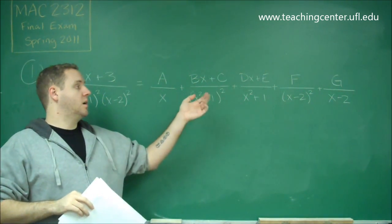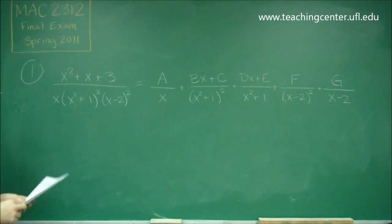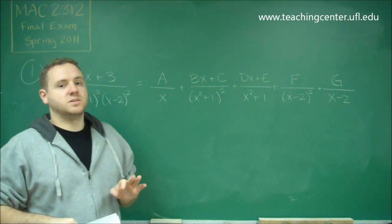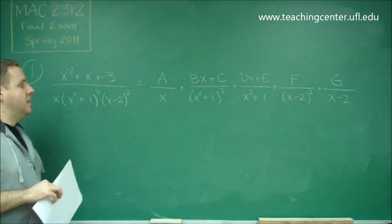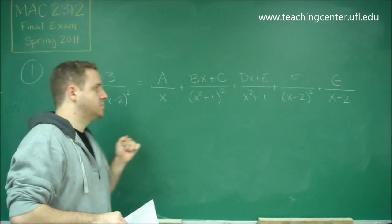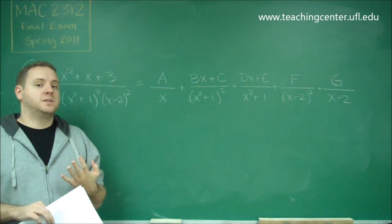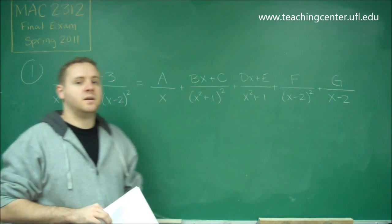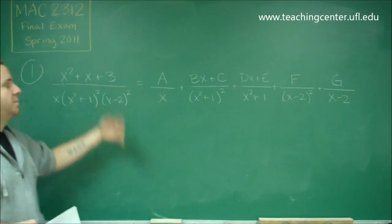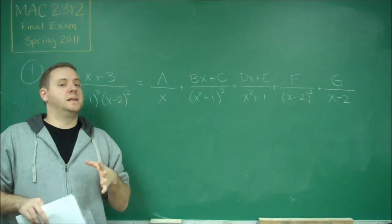So we have many constants in this case, which is one reason you would not be expected to fully solve it — as the question says, do not evaluate. But to do so, you would need to multiply each term by all the missing factors. The methods for solving are: plugging in numbers that make factors zero — for example x equals 0 or x equals 2 would knock out many factors, leaving a system of equations — or matching powers of x. Everything in front of x squared must equal 1, in front of x must equal 1, and the constants must equal 3. Any powers of x greater than 2 must equal zero, giving you additional equations.